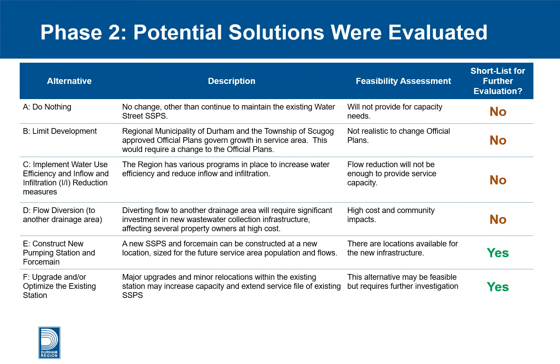The following alternatives to providing wastewater pumping capacity in the service area were evaluated in the initial screening process: A) Do nothing; B) Limit development; C) Implement water use efficiency and inflow and infiltration reduction measures; D) Flow diversion to another drainage area; E) Construct a new pumping station; and F) Construct and/or optimize the existing station. Constructing a new pumping station as well as upgrading and/or optimizing the existing station were the only two alternatives considered to be feasible.